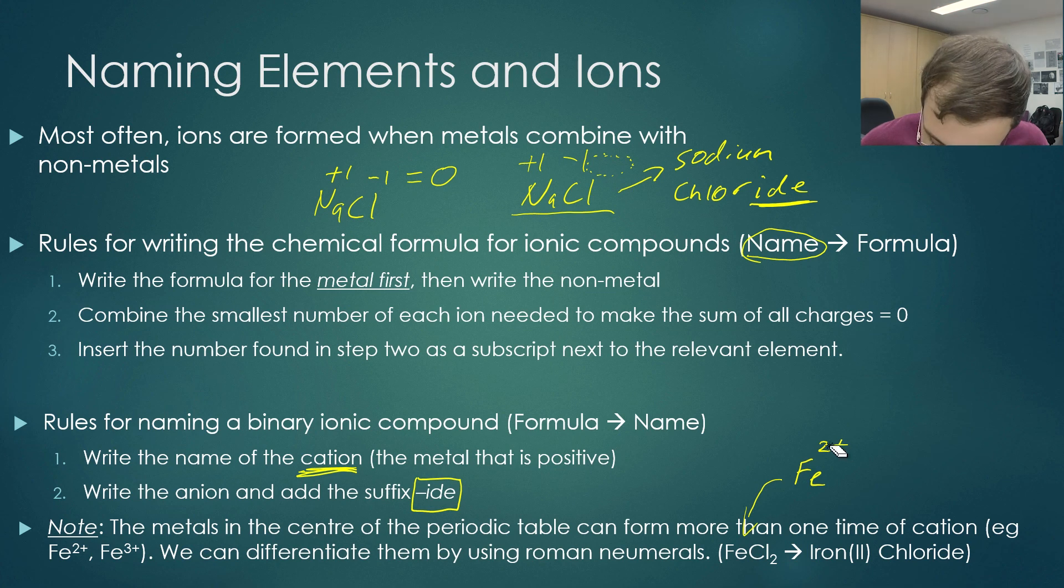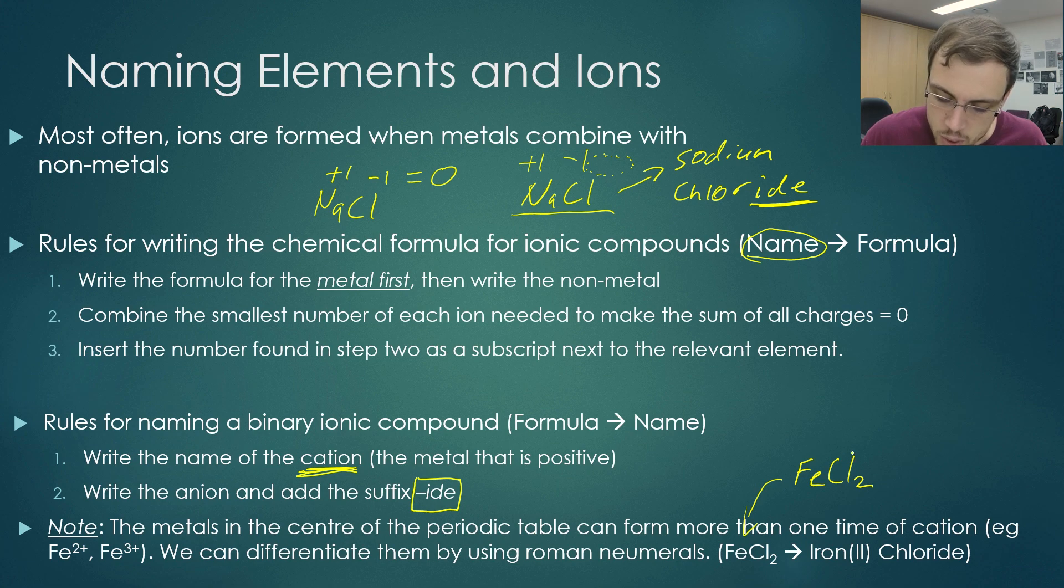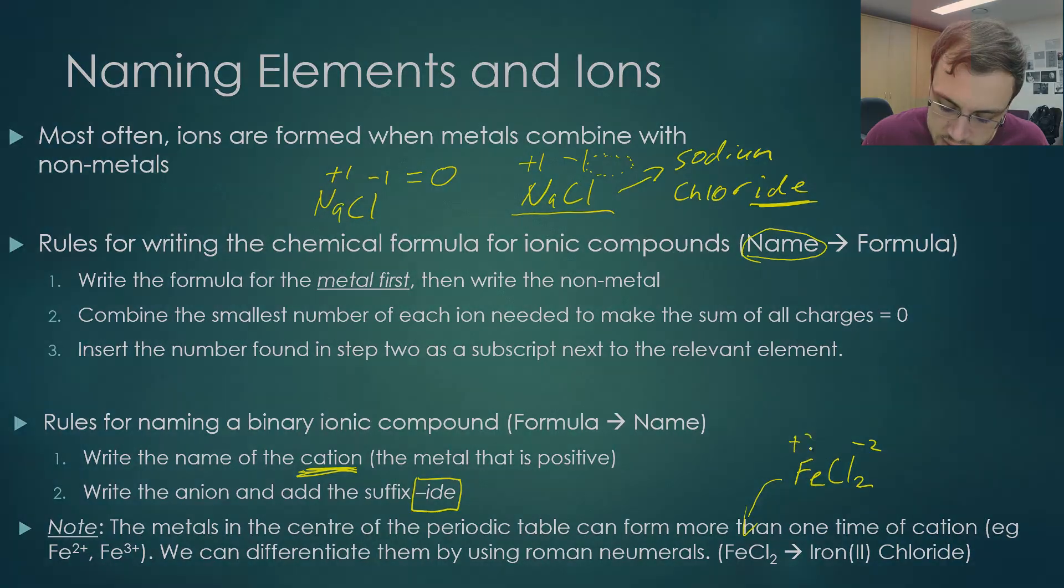And that is why it is FeCl, and as a subscript, we write two. We have the charge of chloride, which is minus one, times two, that's minus two, and iron is plus two.